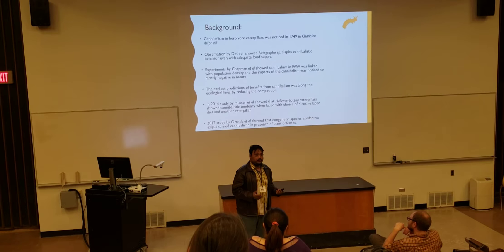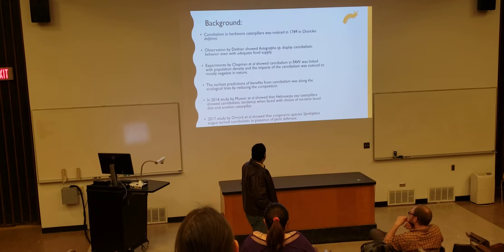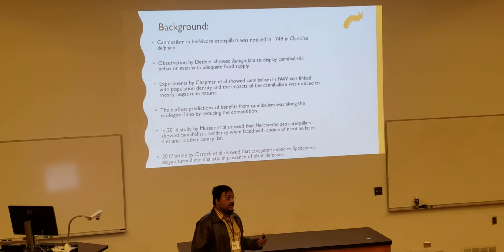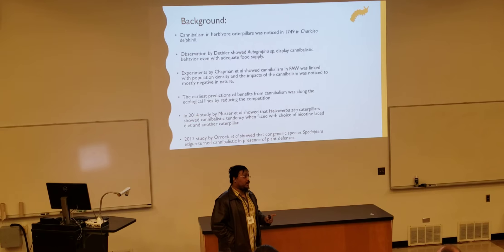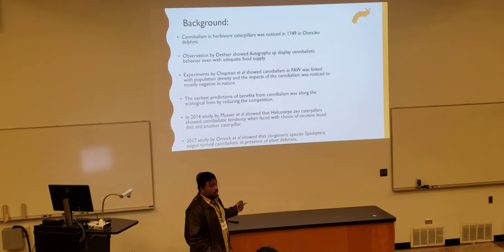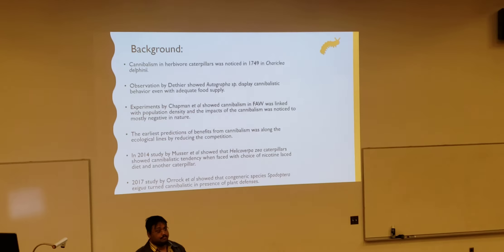Now comes the key prior work. My advisor Dr. Musser in 2014 showed that HCI caterpillars, which are also a generalist caterpillar and prolific cannibal, choose to eat each other rather than eat a diet that is laced with nicotine. And one of the plants that leads to cannibalism is tobacco, which produces nicotine. In 2017, Dr. Ollock showed that a congeneric species of Spodoptera could turn cannibal when plant defenses were present — in particular, he worked with methyl jasmonate.